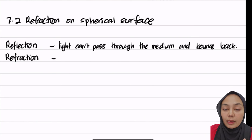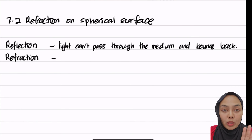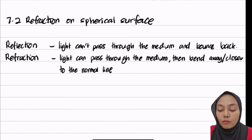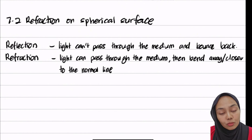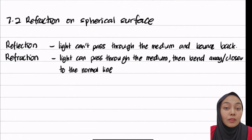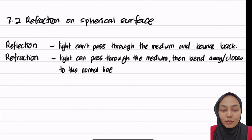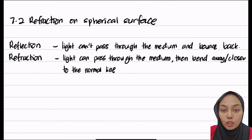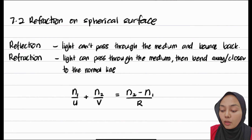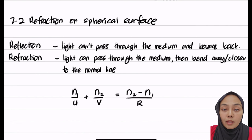Reflection is light that cannot pass through a medium and bounces back. But for refraction, the light can pass through, and after it passes through, it starts to bend away or bend closer to the normal. The equation we're going to use is n1 over u plus n2 over v equals n2 minus n1 over r.